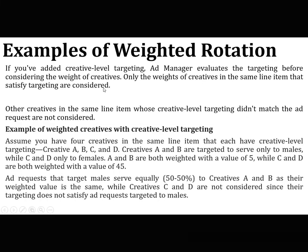If you have added creative-level targeting, Ad Manager evaluates the targeting before considering the weight of creatives. Only the weights of creatives in the same line item that satisfy targeting are considered. For example, assume you have four creatives A, B, C, and D in the same line item. Creatives A and B are targeted to serve only to males, while C and D serve only to females. A and B are both weighted with a value of 5, while C and D are weighted with 45. An ad request targeted to males serves equally 50/50 to creatives A and B, since their weighted values are the same, while C and D are not considered.